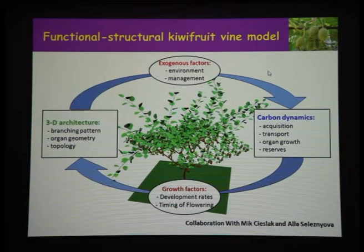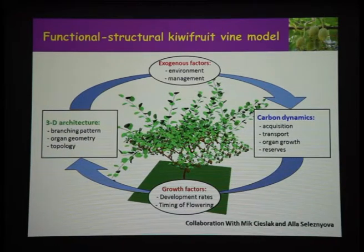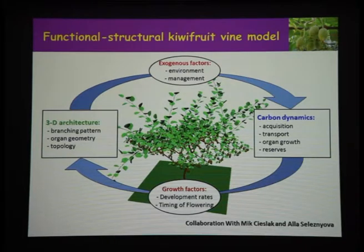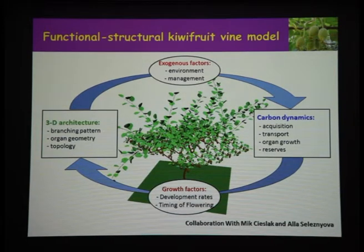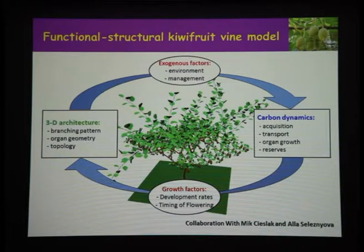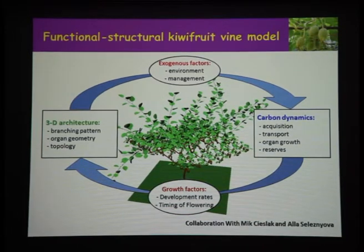From that simple beginning, we went on to look at more and more complex within-plant types of functions. One of the more recent pieces of work is this kiwifruit vine model, done with Mick Cieslak and Alice Delisdinova at Plant and Food in New Zealand. The idea is that we have our 3D architecture — rules for branching patterns, rate of branching, organ geometry, and how the components are connected — then we look at environmental factors: temperature, light, and farmer activity, and how those affect the carbon dynamics of the plant.